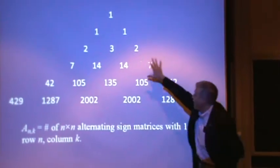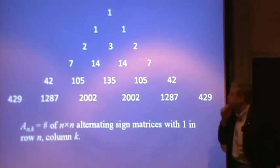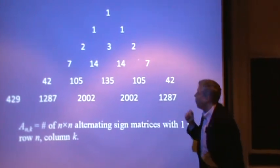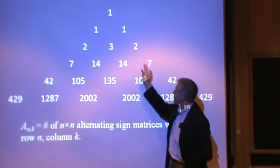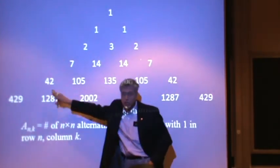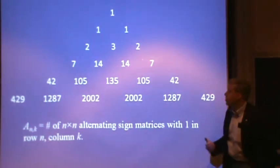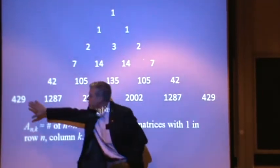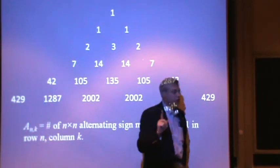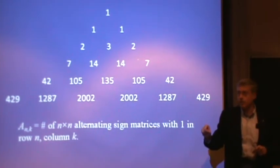Dave Robbins started to look at this arrangement and see if anything nice was going on. One observation you make quite quickly is that if you add up the entries in any row, it's always equal to the first entry in the next row. So the total number of five by five alternating sign matrices equals the number of six by six alternating sign matrices that have a one in the lower left-hand corner.